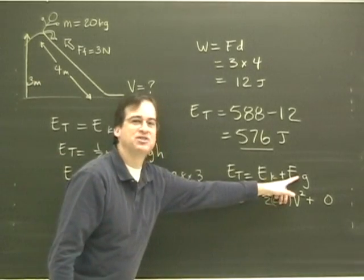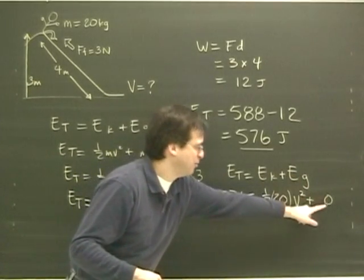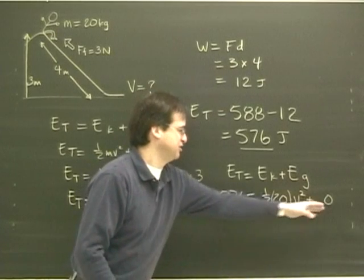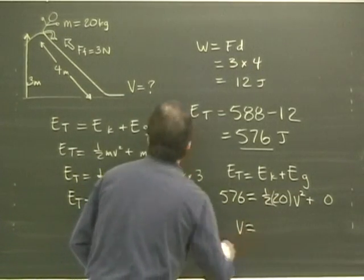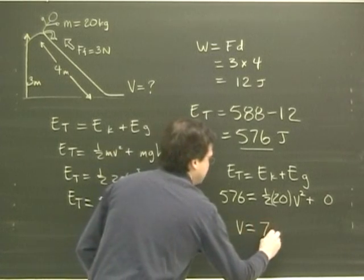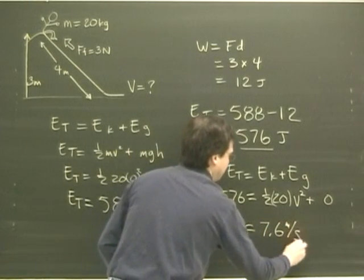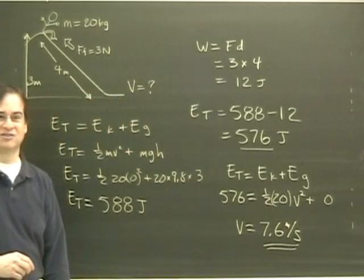So h in here is going to be zero, so let's skip a step and put a zero right in there. So mgh is going to be zero. So I can rearrange this, I solve for the velocity, and it comes out to 7.6 meters per second. And that's how we get the answer.